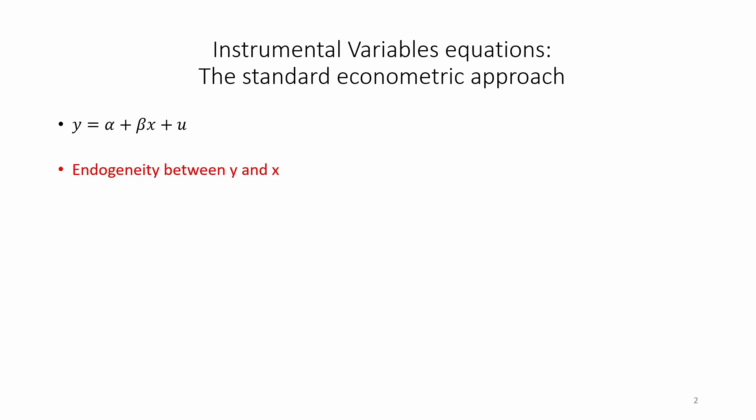Let's consider the case where there is endogeneity between y and x. For example y is earnings, x is education, but there may be background factors that cause both education and earnings that mean that beta cannot simply be interpreted as the causal effect of education on earnings.